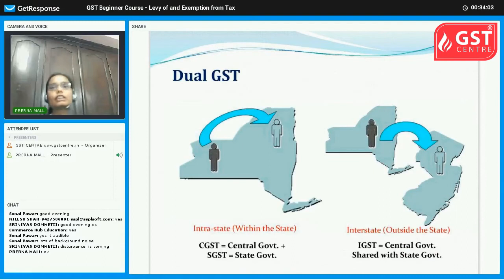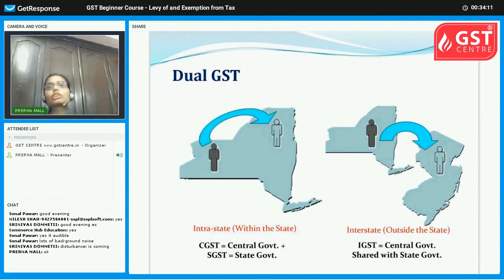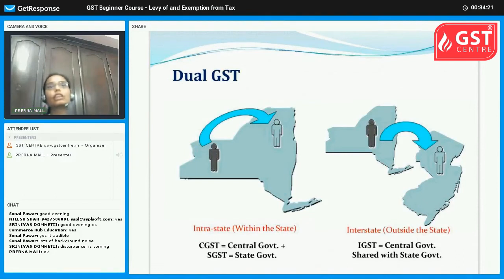Now we start with dual GST. In case of intra-state sales — that is, within the state — suppose within Maharashtra we have to buy and sell goods. We have two components: Central Goods and Service Tax (CGST) and State Goods and Service Tax (SGST).